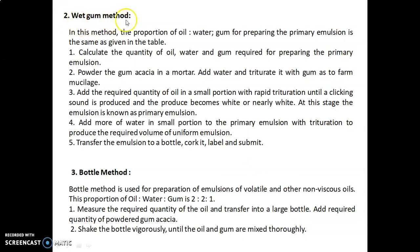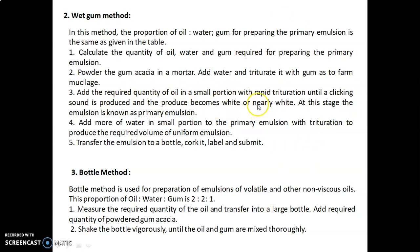The second method is the wet gum method. The proportion of oil to water to gum for preparing the primary emulsion is the same as in the table. Calculate the required quantities, then powder the gum acacia in a mortar, add water, and triturate to form mucilage. Then add the required quantity of oil in small portions with rapid trituration until a clicking sound is produced and the product becomes white or nearly white — this is the primary emulsion. Add more water in small portions to the primary emulsion with trituration to produce the required volume.